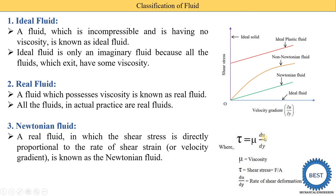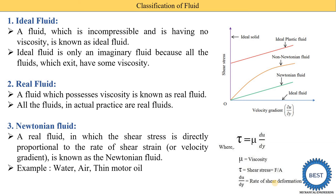If we convert this definition into an equation, we write tau is equal to mu into du/dy, where mu is the viscosity, tau is the shear stress, and du/dy is the rate of shear deformation. Rate of shear deformation means the difference of velocity between layers of fluid. For example, water passing through a pipe has different layers with different velocities — maximum velocity at the center and reduced velocity when the water comes into contact with the pipe wall.